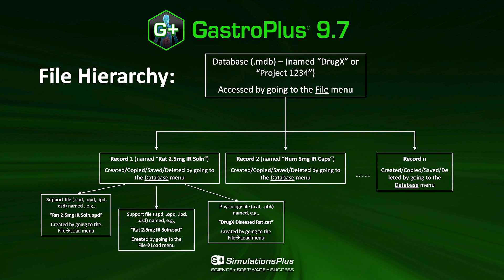GastroPlus is composed of multiple files organized as such. First, you have the database at the top that contains all of your project information, and it can be accessed on the file menu of the software. Within this database, you can create multiple records that will represent a specific study. For example, in that case, you have record number 1 for a rat study that received 2.5 milligrams of an immediate release solution of a specific API.